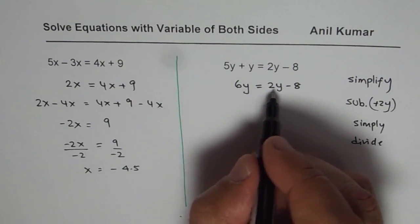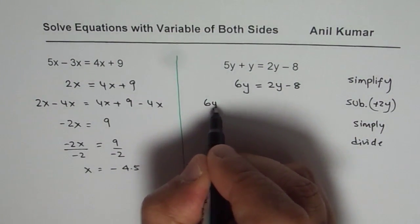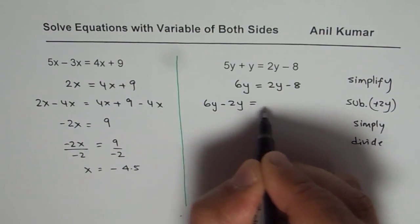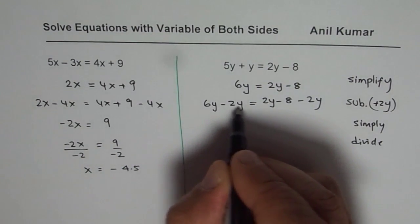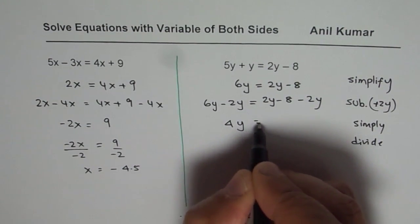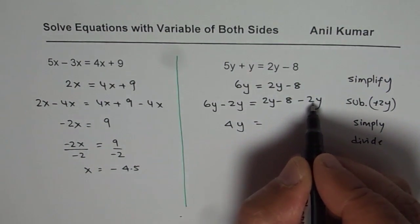Now we have to take away 2y from both the sides. We get 6y minus 2y equals 2y minus 8 minus 2y. 6y minus 2y is 4y. That is, 2y minus 2y is 0. That was the whole objective to take away 2y.